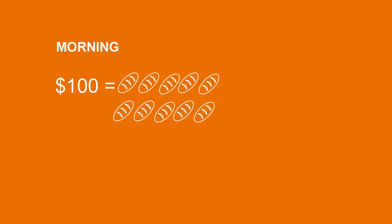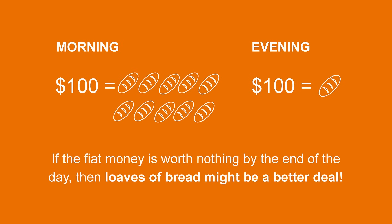For example, if the $100 you hold can get you 10 loaves of bread in the morning, but only one loaf of bread in the evening because of rising prices, what do you think you would do with your money? You would spend it as quickly as possible, of course. Under these circumstances, would you prefer to get paid in fiat money or in loaves of bread? If the fiat money is worth nothing by the end of the day, then loaves of bread would probably be a better option.